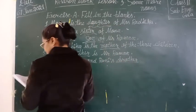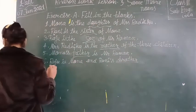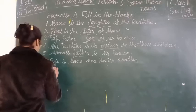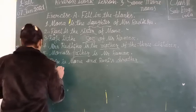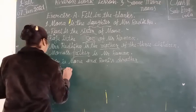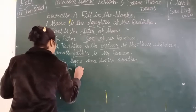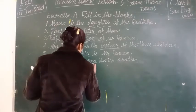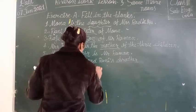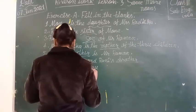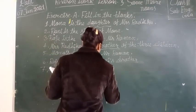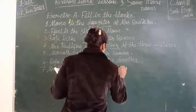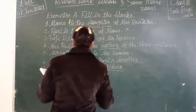Then next, seven. Mr. Raman has three blank. Toh kya hoga fill in the blank mein? Children. Unke teen bachche hain.